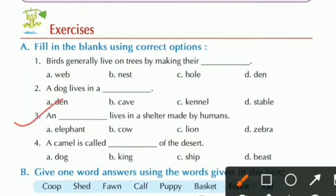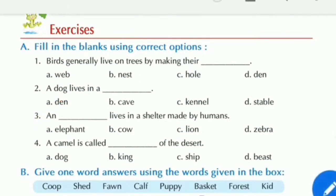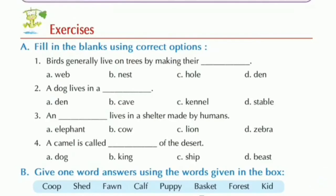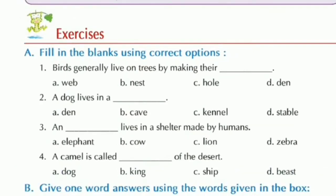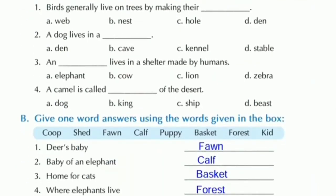Number four: A camel is called dash of the desert. Options: dog, king, ship, or beast. A camel is called a ship of the desert. So the right answer is option C, ship.